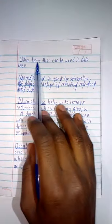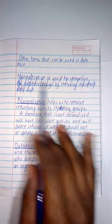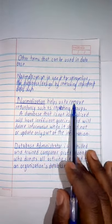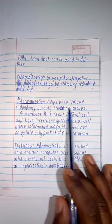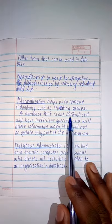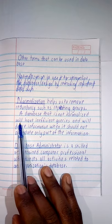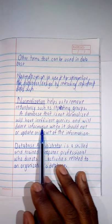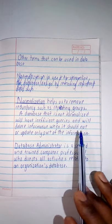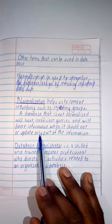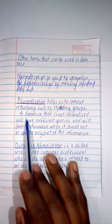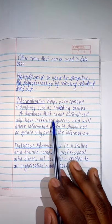Other terms that can be used in databases: Normalization helps us remove redundancy, such as repeating groups. A database that is not normalized will have inefficient queries and will delete information when it should not, or update only part of the information. We should always normalize our database systems.